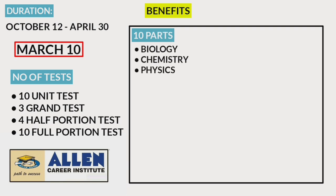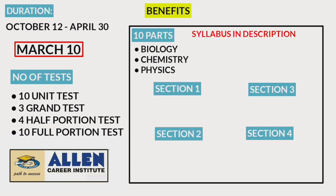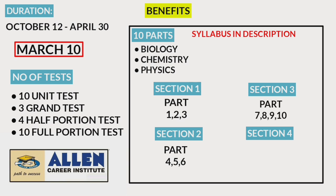That is, Biology 10 parts, Chemistry 10 parts, and Physics 10 parts. You can check the details in the description below. These 10 parts are completed in 4 sections: Parts 1, 2, 3 in Section 1; Parts 4, 5, 6 in Section 2; Parts 7, 8, 9, 10 in Section 3; and the half and full portion test in Section 4.